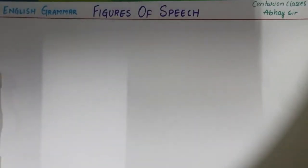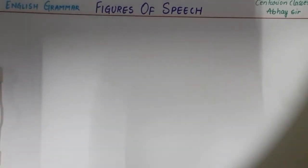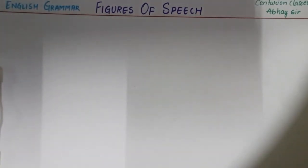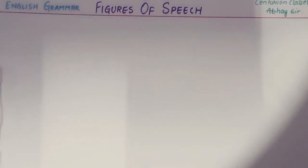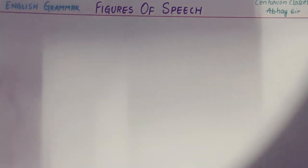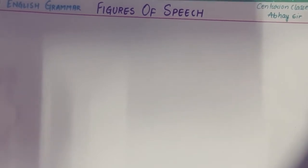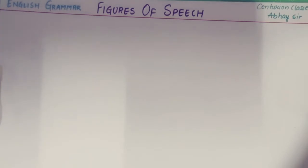Hello students. In this video we are going to study about figures of speech, and specifically we are going to learn today antithesis and oxymoron. Figures of speech is an intentional deviation from the original language — it is different from the way we speak in day-to-day language — just to produce a rhetorical effect. Rhetoric is an art of effective and persuasive speaking or writing. It is very different from our day-to-day speech, and in the current digital scenario, you need to have such skills.